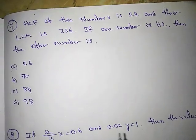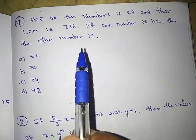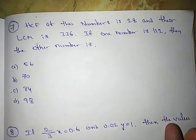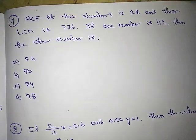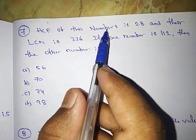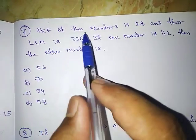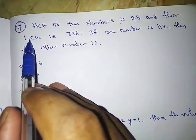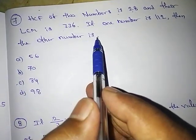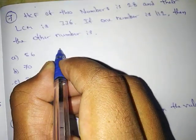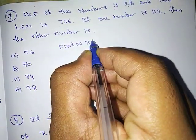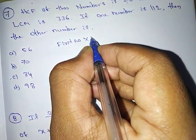In the exam, time is precious — you must also face psychology, languages, and science, so think quickly. Next problem: HCF of two numbers is 28 and their LCM is 336. If one number is 112, find the other number. Use the formula: First Number × Second Number = HCF × LCM.